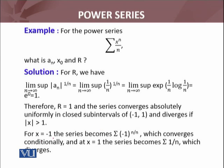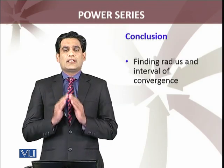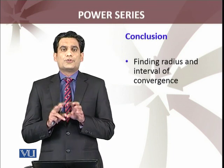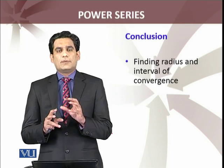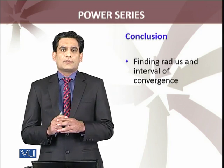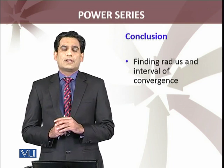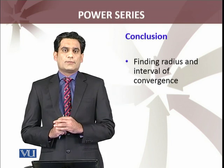What can you say for x = -1? At the endpoints of this interval, the series becomes this one which converges conditionally, and at x = 1 the series becomes 1/n which diverges. As I said about the interval of convergence, at the endpoints we don't know—the series may be convergent or may be divergent. In the previous example we saw that at one endpoint the series converges and at the other endpoint the series diverges.